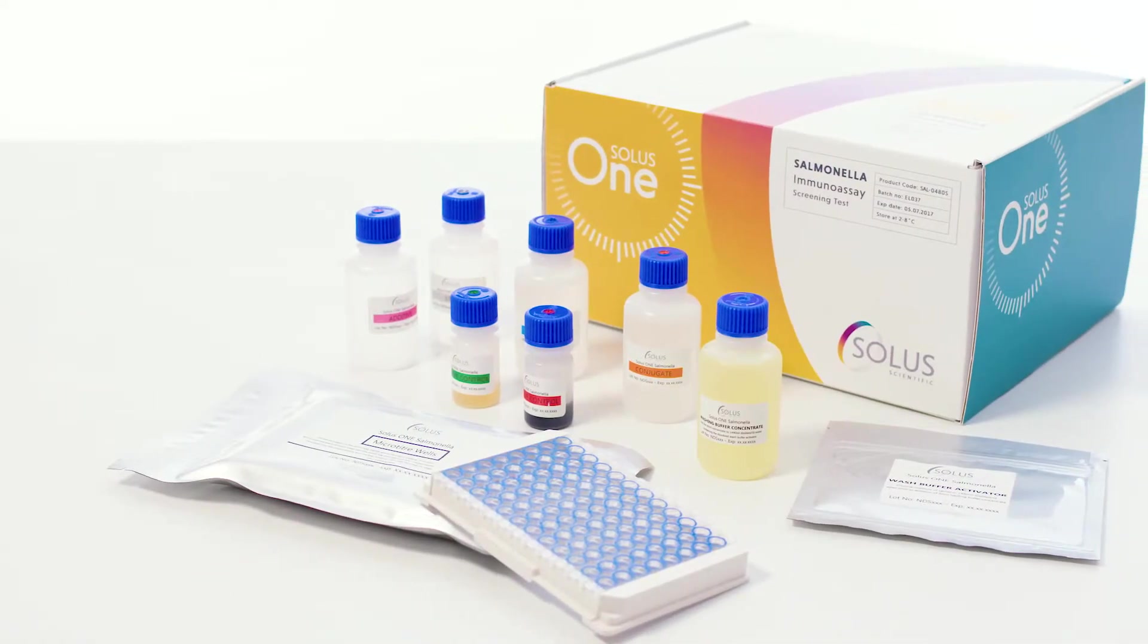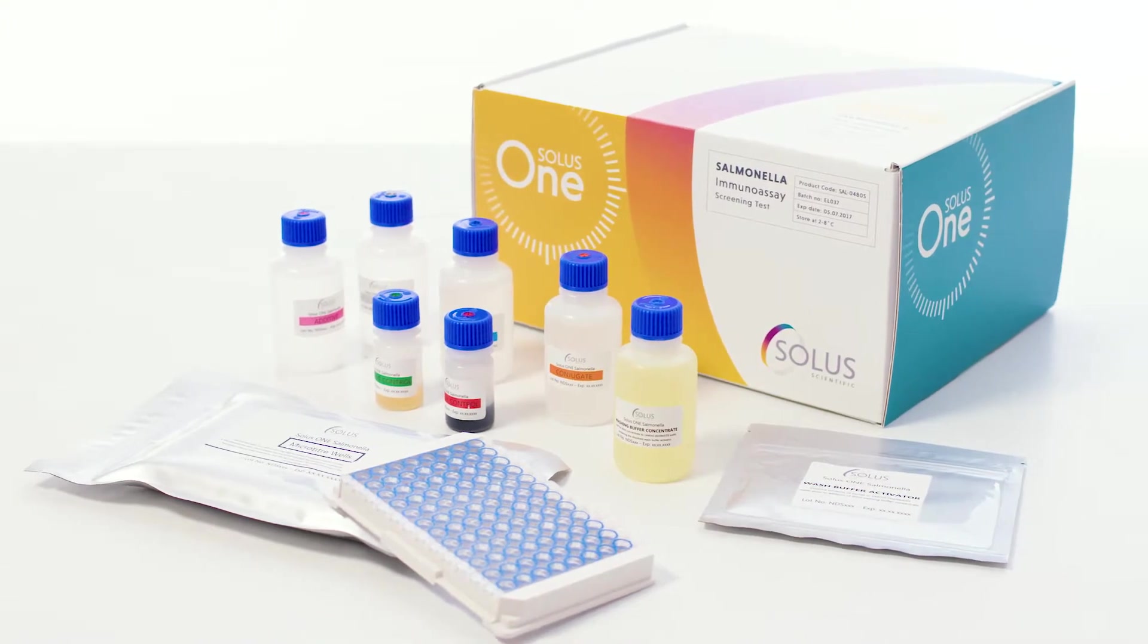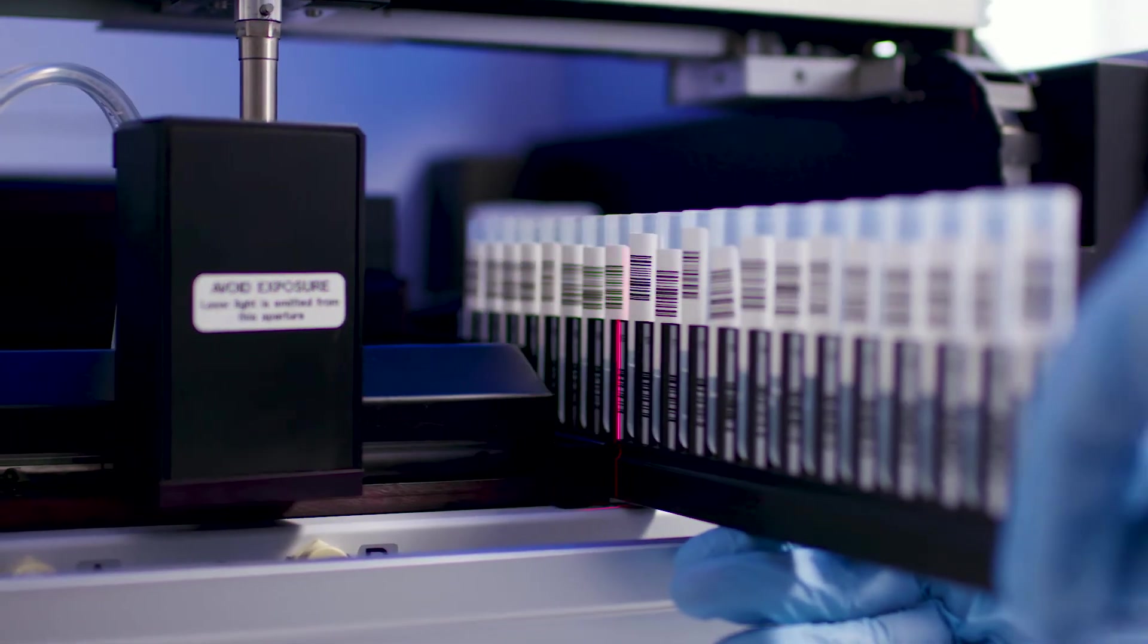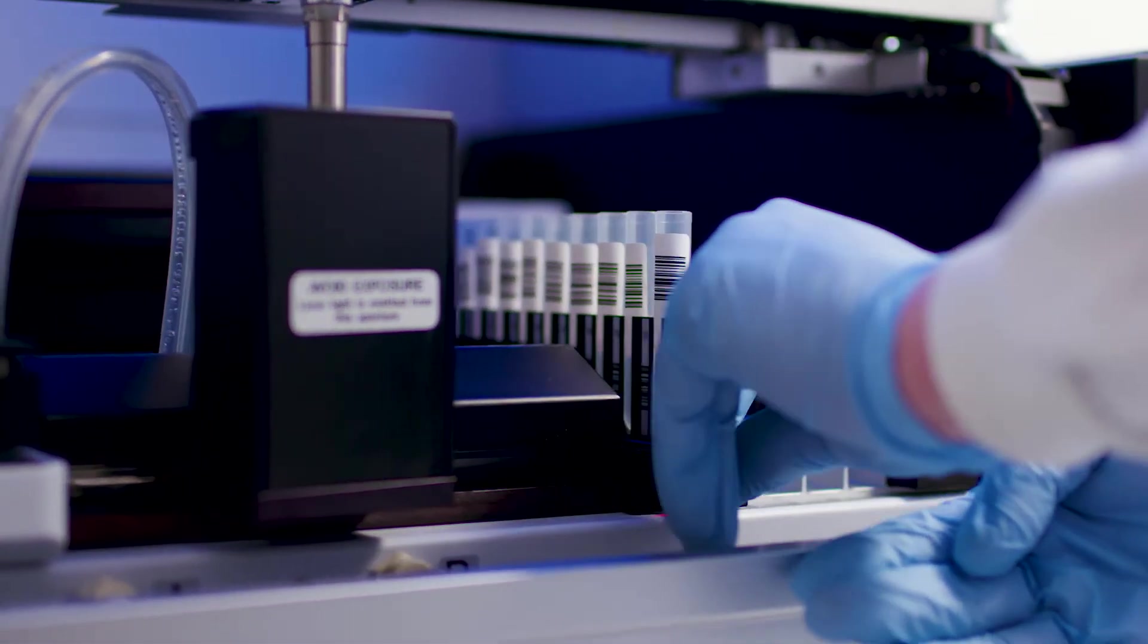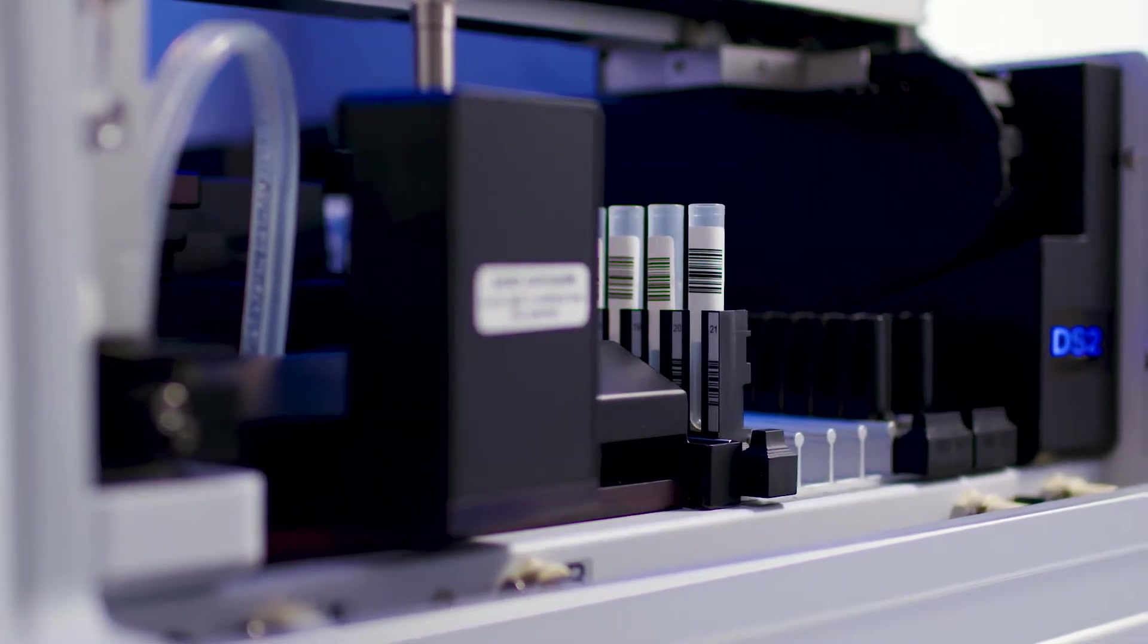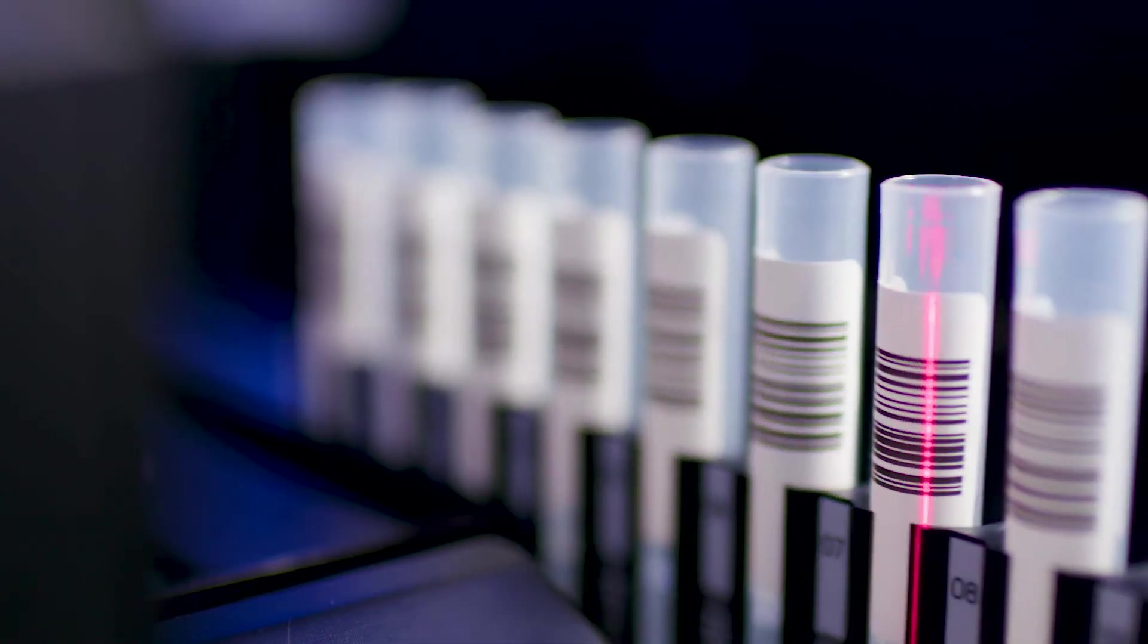Everything required is included within the Solus1 kit and is color coded for ease of use. The automation setup begins with the instruction to load the samples. The DS2 barcode scanner will automatically detect the sample barcodes as these are loaded onto the system and enter these onto the run file.